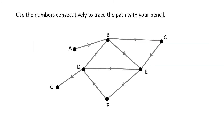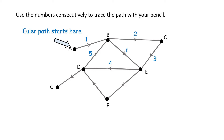Use numbers to consecutively trace the path with your pencil. We'll let our Euler path start at vertex A. Following the arrow directions: A to B is 1, B to C is 2, C to E is 3, E to D is 4, D to B is 5, B to E is 6, E to F is 7, F to D is 8, and D to G is 9. Our Euler path ends at vertex G.